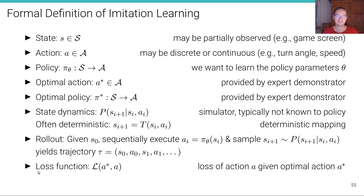And finally, we have a loss function. We have to measure how good an action is. And we do this through a loss function L whose arguments are A star, which is the action, the optimal action, the action provided by the expert for a particular state and the action that has been conducted by the policy A. This is the loss of the action A given the optimal action A star.